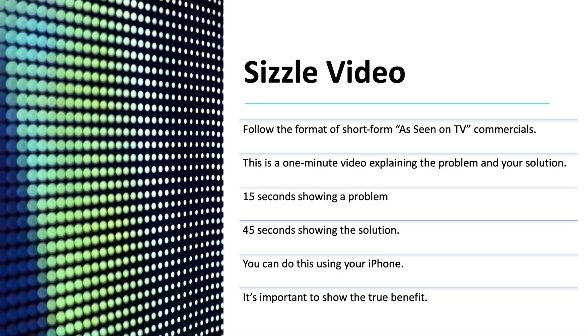Sizzle videos — I love them. Make them short; I say one minute. The first 15 seconds, show a problem. The next 45 seconds, show the solution. Problem, solution — very simple. If you want to see examples of this format, look at the DRTV space — those as-seen-on-TV products. The format is fantastic. Keep it short, keep it to the point, show the problem, show the solution, make it magical. Show that magic moment of the big benefit. Make sure the lighting is great, have a couple of different angles, and you might include a voiceover.